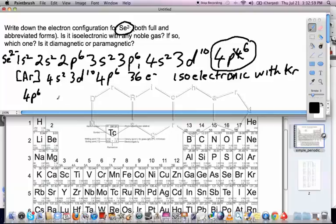But we've got 4p6, and if we fill that in just as we normally would, we've got 6 electrons: 1, 2, 3, 4, 5, 6. We find out that that's a full shell, and there's no unpaired electrons, so that would be considered to be diamagnetic.